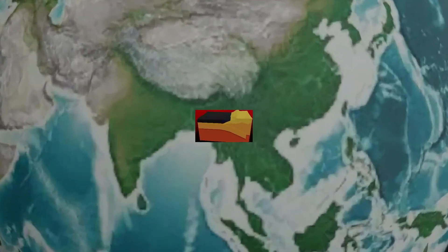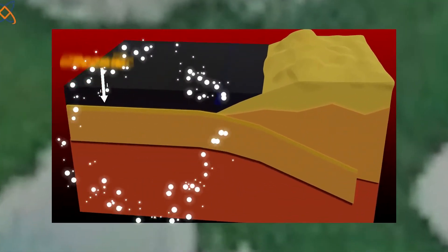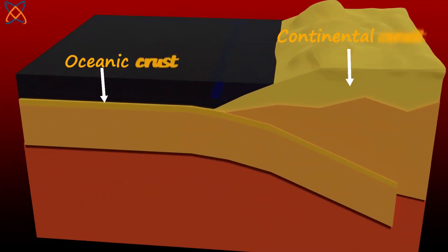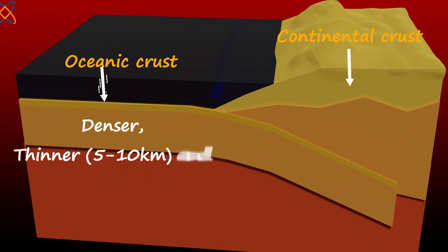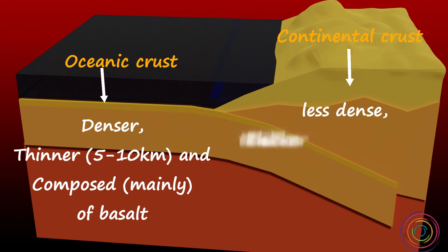There are two types of crust, the oceanic crust and the continental crust. The oceanic crust is denser, thinner about five to ten kilometers thick and mainly composed of basalt.